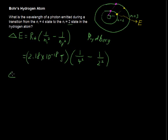So, simplifying all that, you get a change of energy, and remember this is for the electron, change in energy, equal to negative 4.09 times 10 to the negative 19th joules.